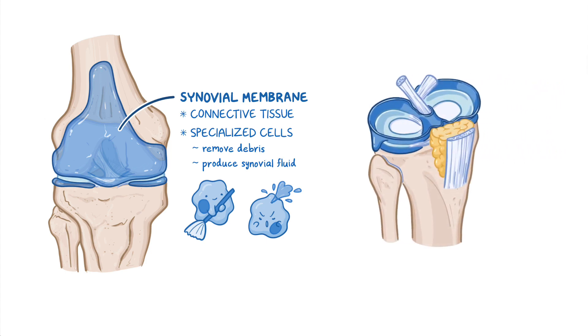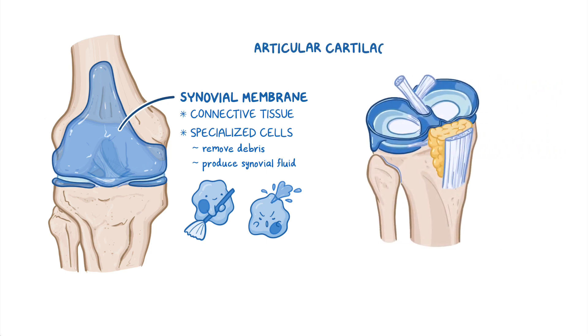In addition, the bones are covered with a layer of articular cartilage, which is a type of connective tissue with a lubricated surface that acts like a protective cushion for bones to smoothly glide against.